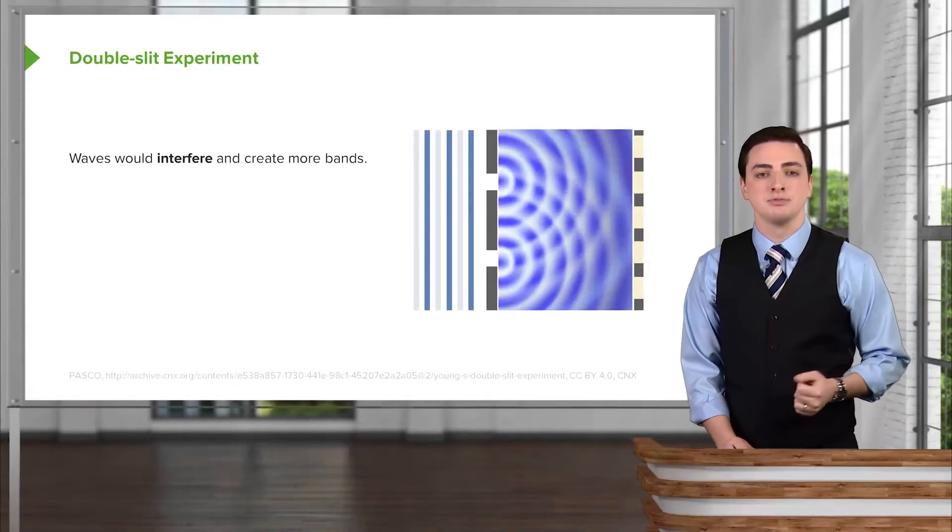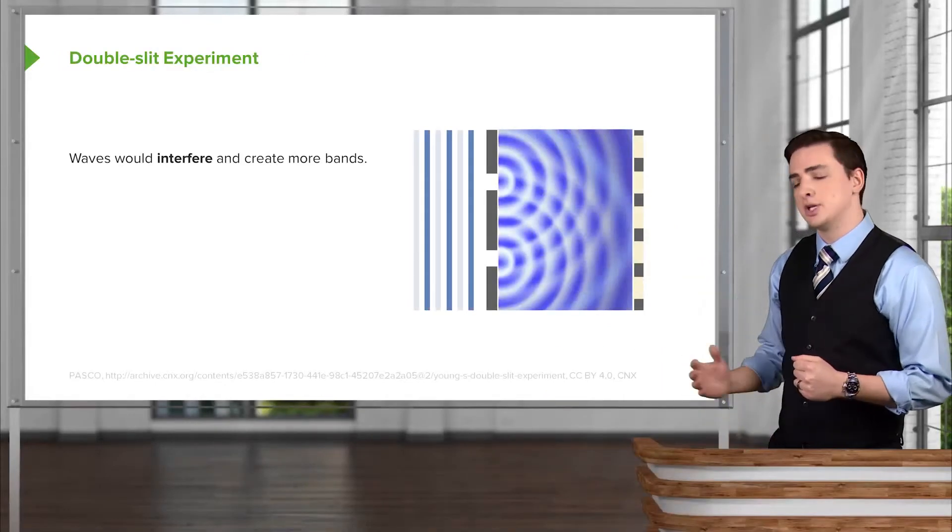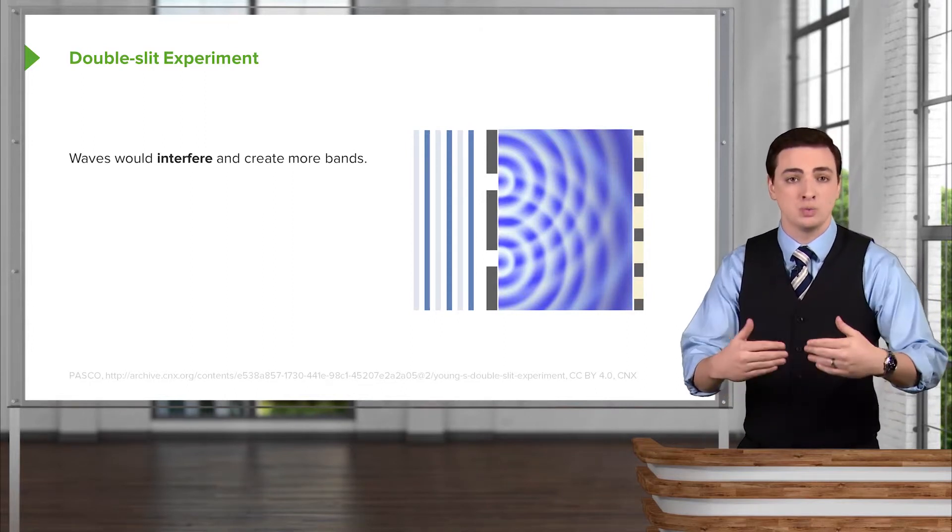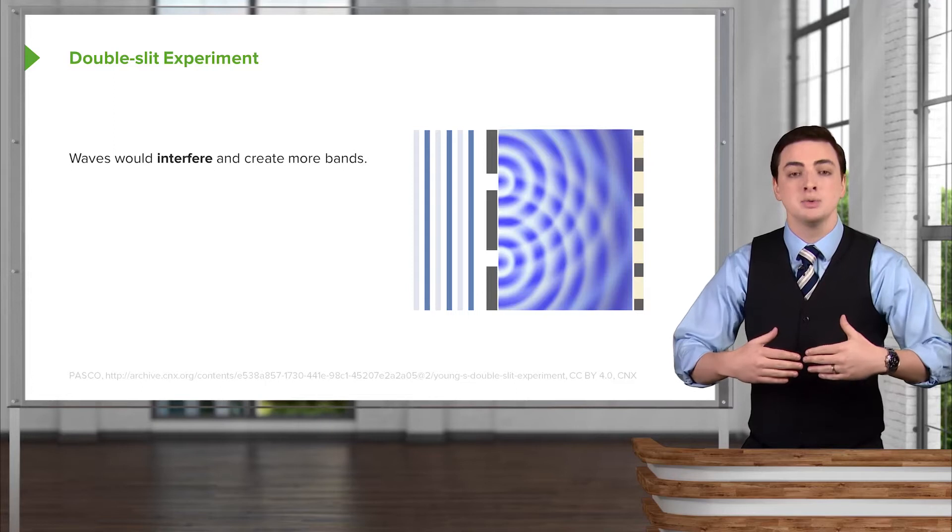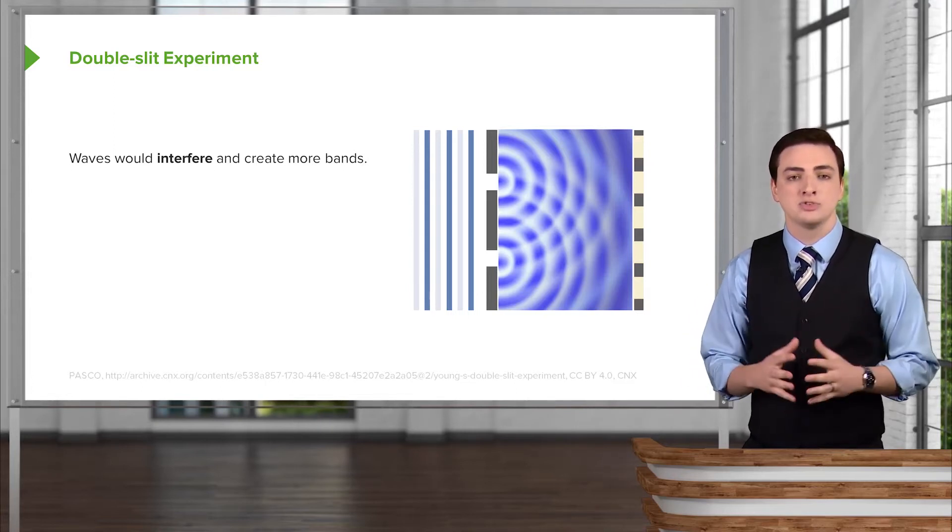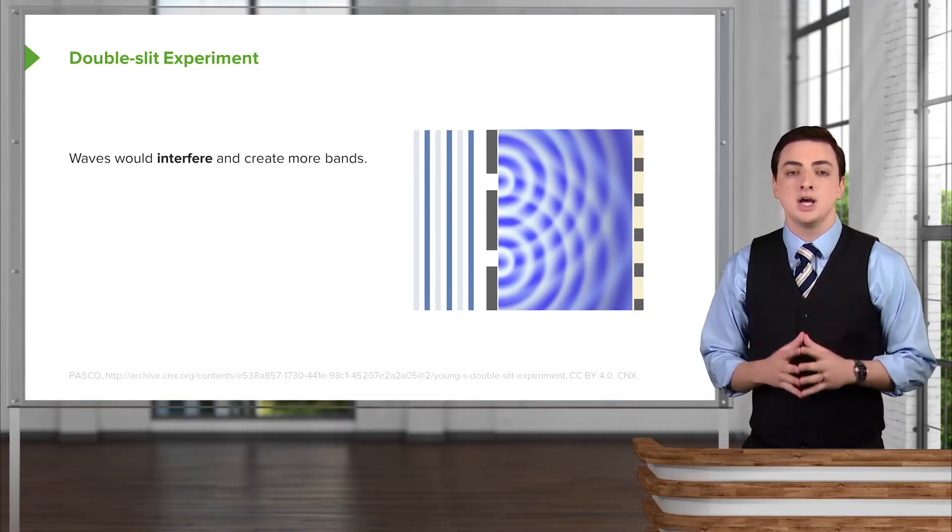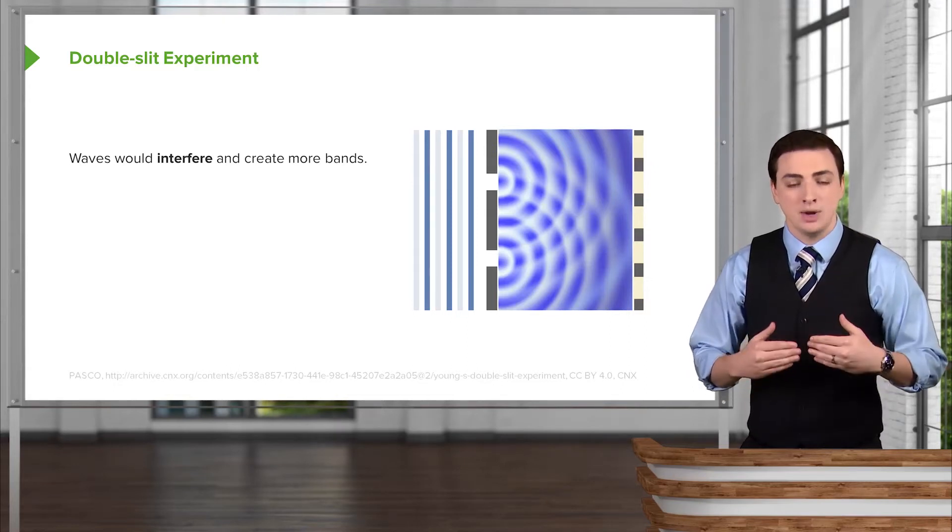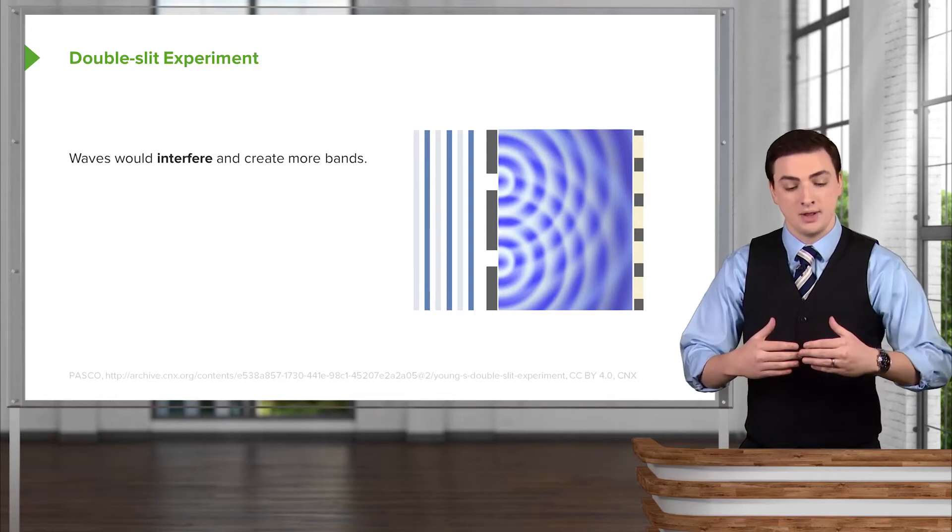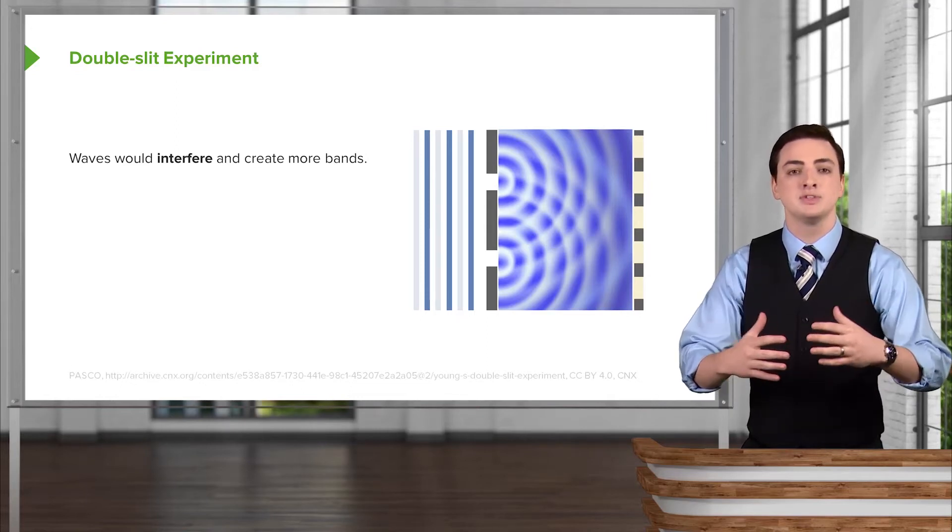But what happens if light were a wave? We know from wave phenomena that if a wave impacts on an opening in some barrier, maybe ocean waves hitting some opening, they would do what's called diffraction. We'll talk more about diffraction and where it comes from in a little bit. But for now, all we need to know is that when waves impact on an opening like this, they bend outwards in sort of a spherical shape.